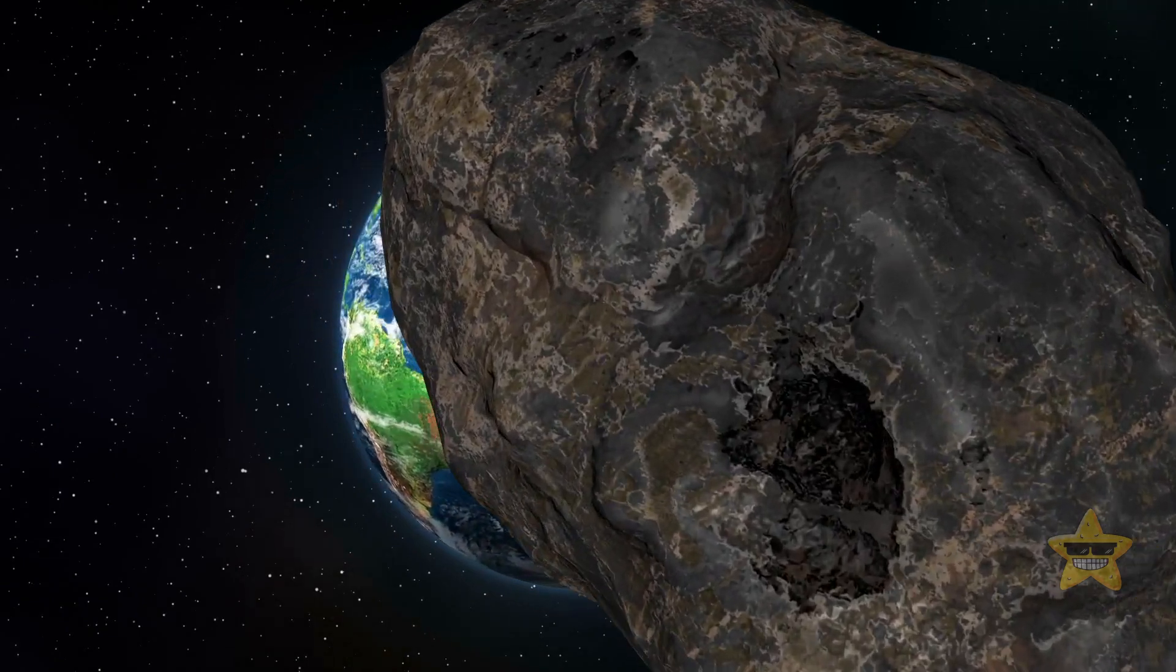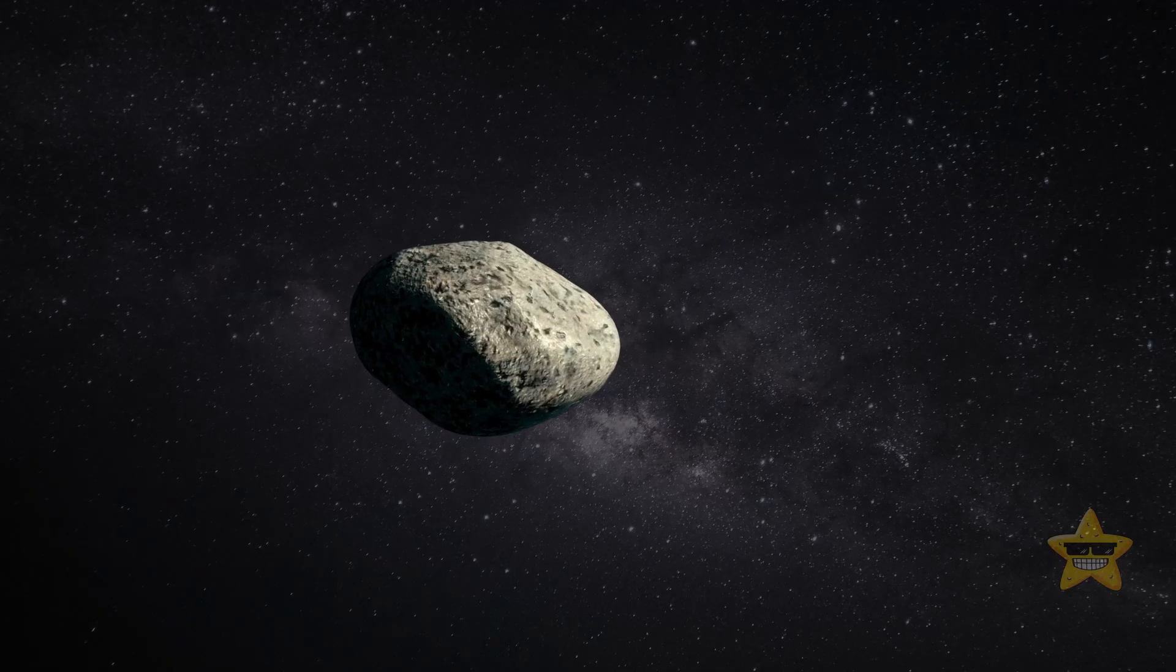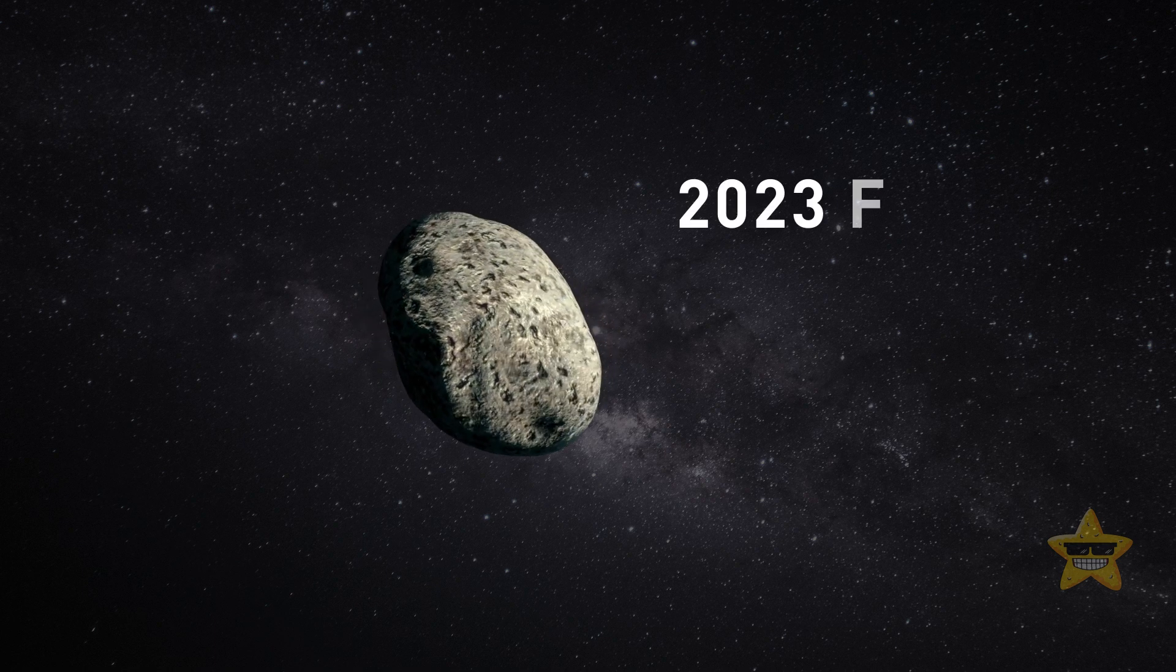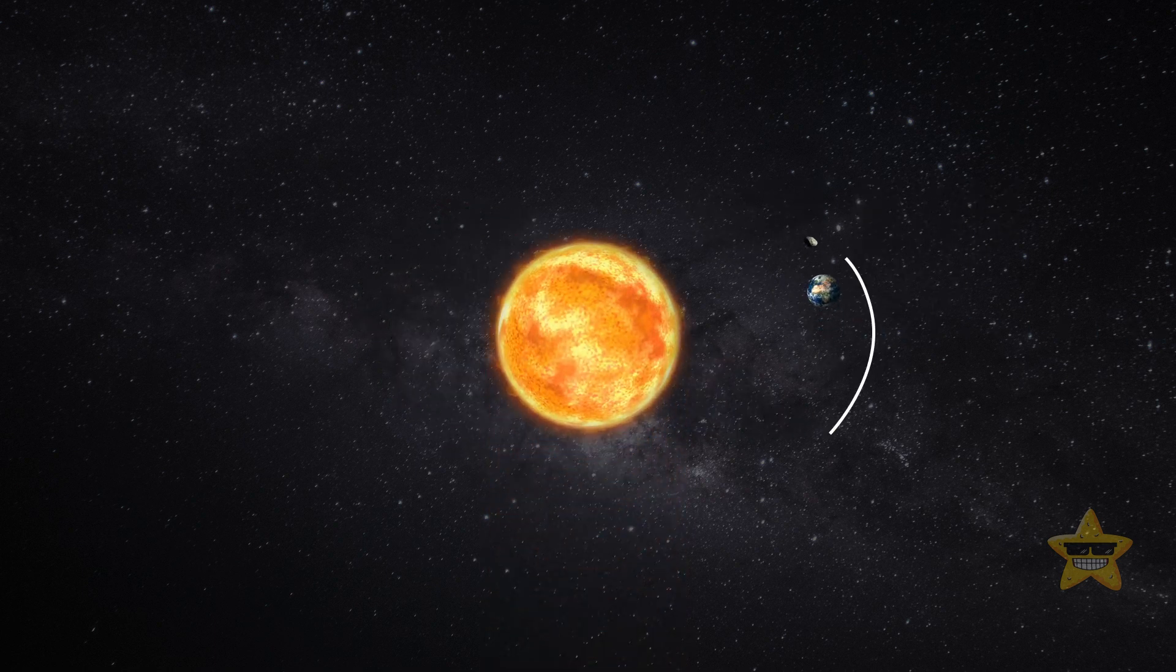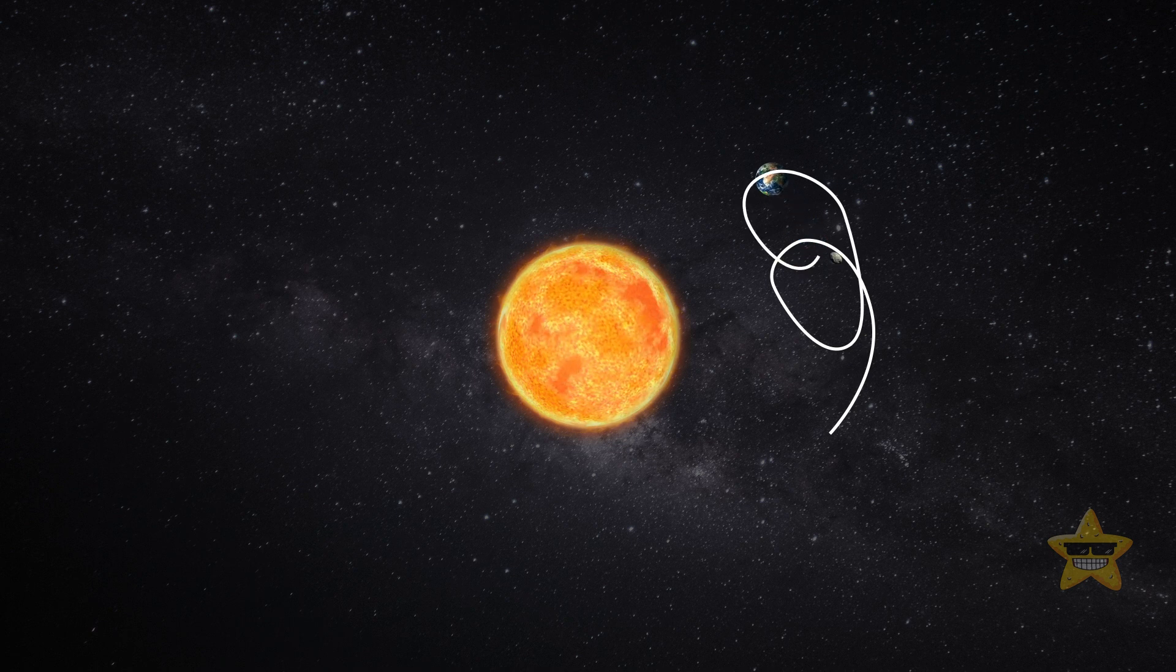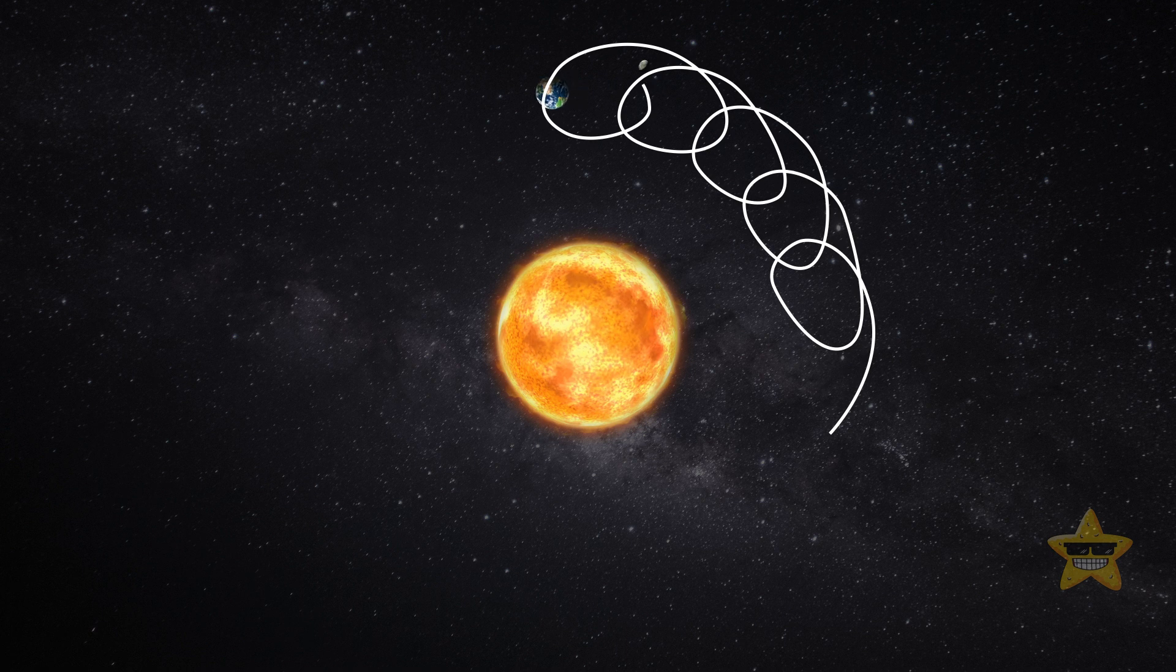The asteroid was named 2023 FW13, and instead of simply orbiting our planet like the moon does, it orbits the sun. But its orbit is so unusual that it causes the asteroid to circle Earth too, keeping it in roughly the same area as our planet even though it doesn't orbit it directly.